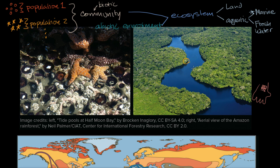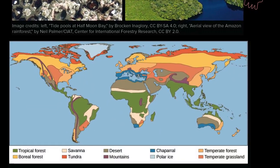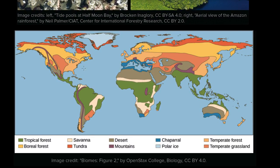Since we're focused on how we can classify ecosystems, one thing that's often done is classifying land ecosystems into various categories. Right over here we have depicted the major types of land ecosystems on our planet and where you might find them. These different types of land ecosystems are called biomes. As you can see from this diagram, tropical forest can be found in the Amazon, in Africa, in Southeast Asia, and in Central and even Southern North America. You have boreal forests at more northern latitudes, savannah, desert, tundra, chaparral, temperate forests, and temperate grasslands.